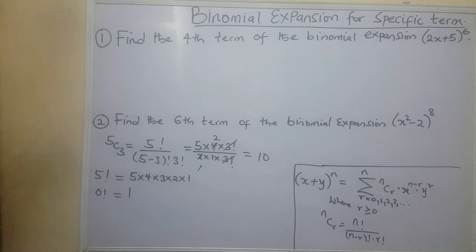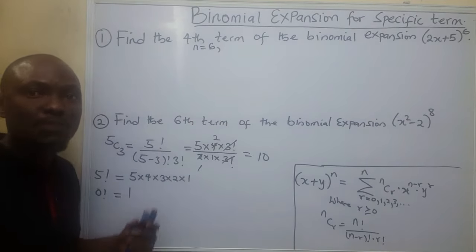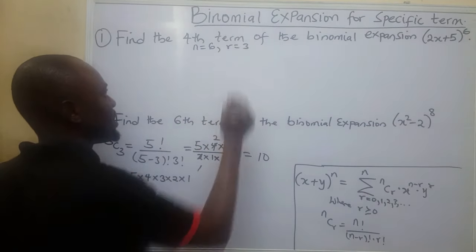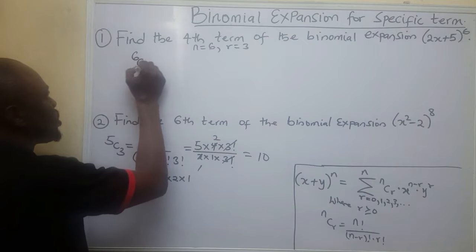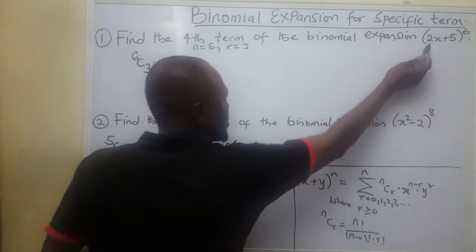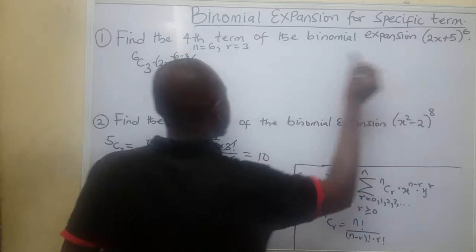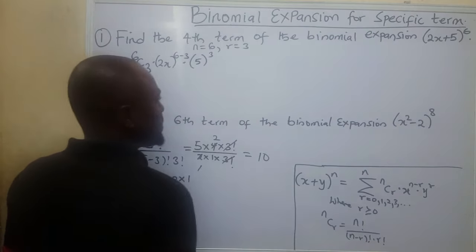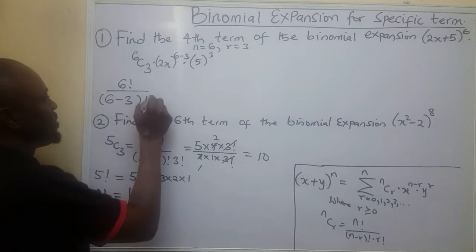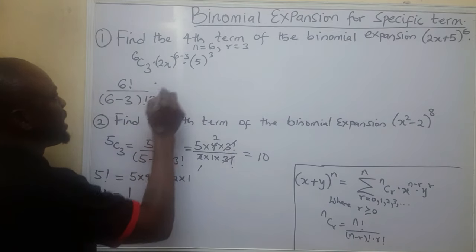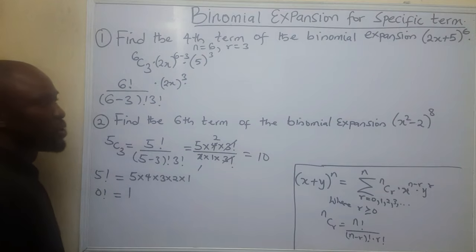Now let's solve the problem on the board. Find the fourth term of the binomial expansion. My n is 6 because n represents the highest power of my binomial, and r in this case is 3. I am going to use 6 combination 3, times the first term 2x to the power of 6 minus 3, times the second term 5 raised to the power 3. Now I do 6 factorial divided by 6 minus 3 factorial times 3 factorial, times 2x to the power 3, and 5 cubed gives me 125.